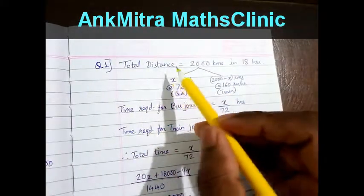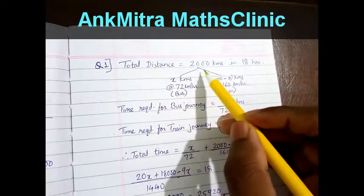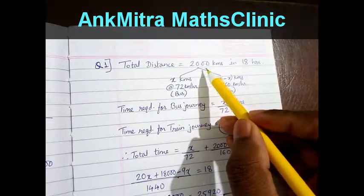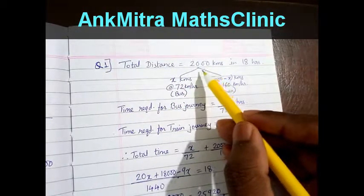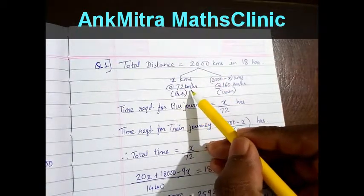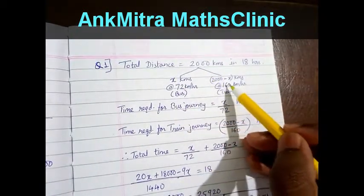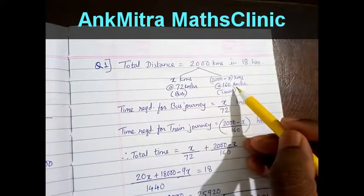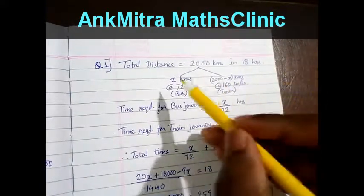In this question it is given that a man's total journey of 2000 km is split into two parts. The first part being by bus at the speed of 72 km per hour and the remaining part by train at a speed of 160 km per hour.